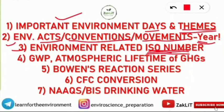Number four is Global Warming Potential and Atmospheric Lifetime of Greenhouse Gases. Questions can ask you to arrange them in increasing or decreasing order, or in some twisted form. So Global Warming Potential and Atmospheric Lifetime of Greenhouse Gases must be known.